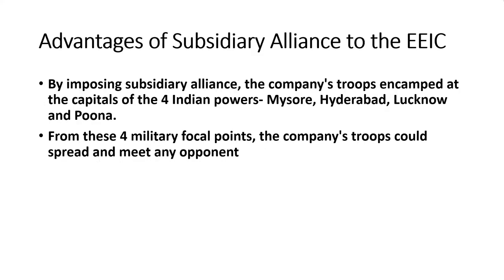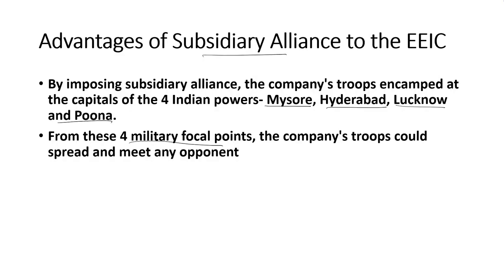In what way did the subsidiary alliance help the British? The Company was now able to station their military at four important state capitals: Mysore in South India, Hyderabad, Delhi in North India, and Poona in western India. From these four important state capitals the British army could move to any part of India easily and suppress the enemies.